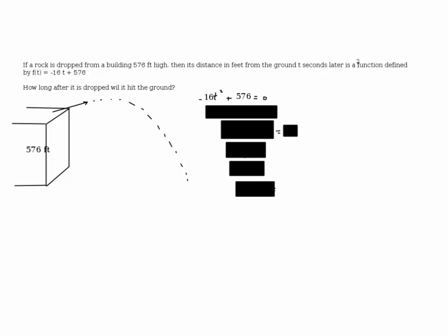So when it hits the ground, then this whole thing would be equal to zero. So what we need to do in this case is set -16t² + 576 equal to zero.